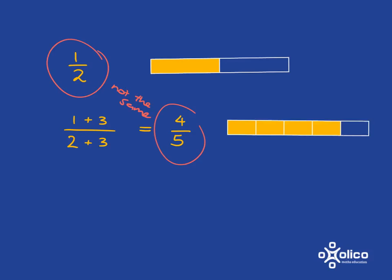So, adding the same to the top and the bottom does not give you an equivalent fraction. That means, even when you get into algebra, say, if you had 1 plus x over 2 plus x, it is absolutely not the same as 1 over 2.